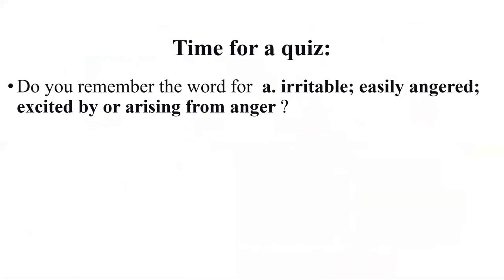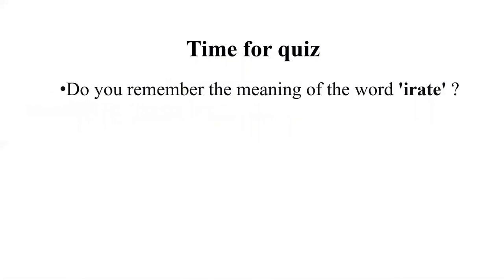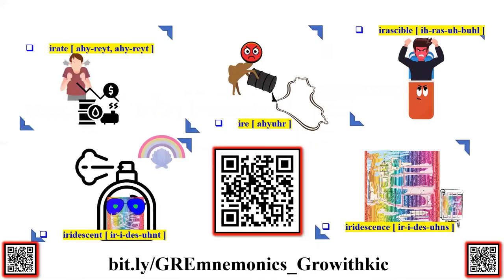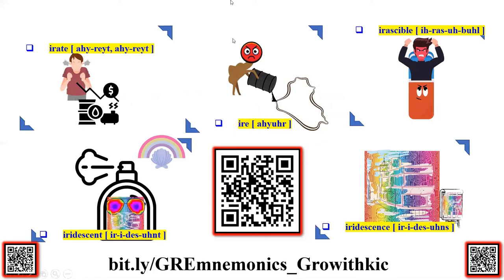Time for a quiz. Do you remember the word for irritable, easily angered, excited by or arising from anger? Do you remember the meaning of the word irate? Do you remember the word as well as the meaning associated with this mnemonic? We hope you got all three of them right. In case you haven't, please feel free to watch the video again. Let us know about your experience here — till we meet next with the next set of GRE words. Thank you.